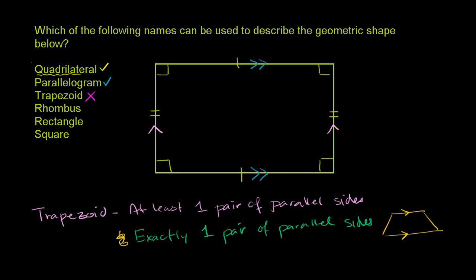Now let's consider a rhombus. A rhombus is a quadrilateral where all four sides are congruent — they're not necessarily at right angles to each other. This figure has two pairs of sides that are the same length, but there's no information telling us that the adjacent sides are equal to each other. So we can't claim this is necessarily a rhombus. If someone told us those lengths were equal, things would change, but for the sake of this problem we're not going with rhombus.